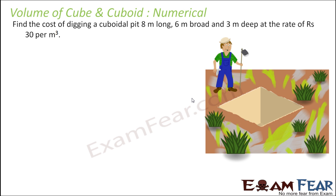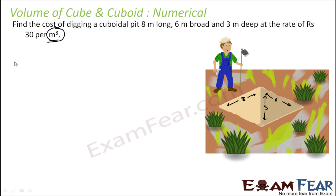Find the cost of digging a cuboidal pit. The dimensions of the pit are 8 meter long, 6 meter broad, and 3 meter deep. The rate is given as 30 rupees per meter cube. You just find the volume of this pit. Try to understand why not to find surface area but volume — because the cost of digging is given per meter cube, that means we are looking for volume.